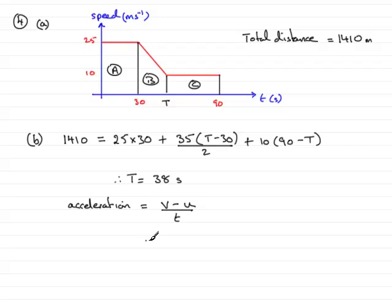we see that this is going to equal V, which is 10, minus the initial speed, here was 25, and it took 8 seconds because we now know that T was 38, 38 minus 30, 8 seconds. And so 10 minus 25 is minus 15, over 8 turns out to be minus 1.875,